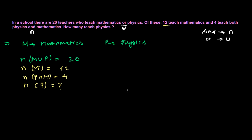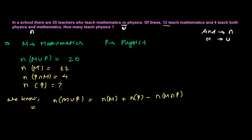We can solve this with a Venn diagram or without one. Let's try the formula. We know that n(M∪P) = n(M) + n(P) − n(M∩P). Let's put all the given information into the formula. M union P is 20, the number of teachers teaching math is 12, and teachers teaching both physics and math is 4. Note that M∩P and P∩M have the same meaning.